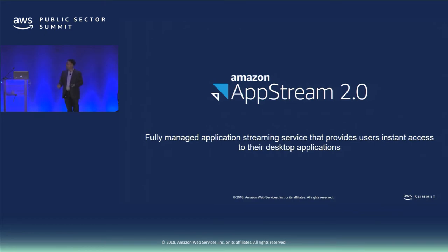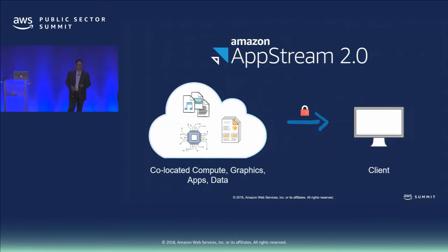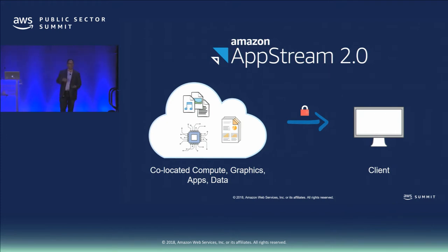We'll talk about some use cases today. We'll talk about what the Cornell team is doing and some stuff that might be specific to your environment. The nice piece with AppStream is the servers, the GPUs, the compute — all of that is up in the cloud. You don't have to worry about managing it or dealing with it. In end-user delivery, it's pretty easy — open up a browser, ready to go.